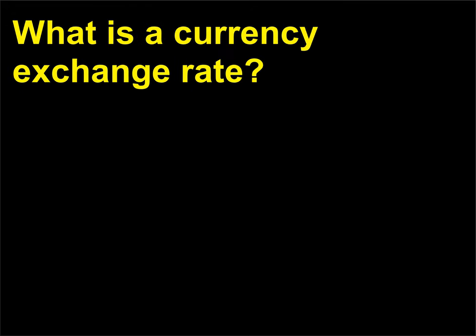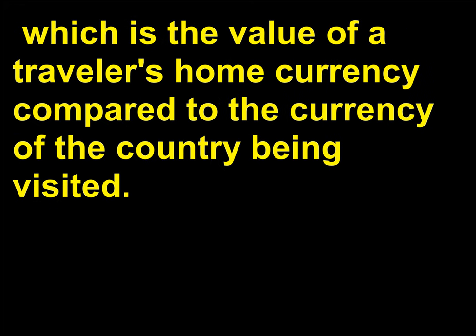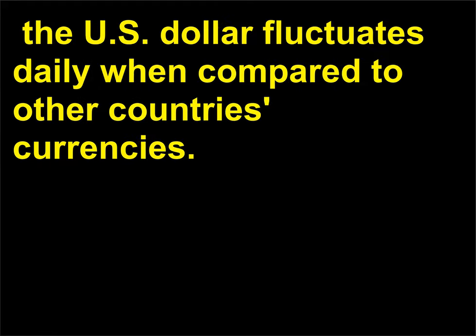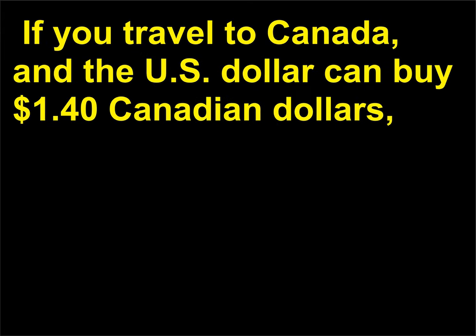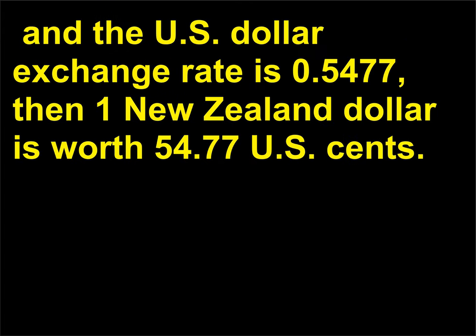What is a currency exchange rate? When traveling to another country, it is important to know the currency exchange rate, which is the value of a traveler's home currency compared to the currency of the country being visited. For example, the U.S. dollar fluctuates daily compared to other countries' currencies. If you travel to Canada and the U.S. dollar can buy $1.40 Canadian dollars, then the exchange rate is 1.40 to 1. If you go to New Zealand and the U.S. dollar exchange rate is 0.5477, then one New Zealand dollar is worth 54.77 U.S. cents.